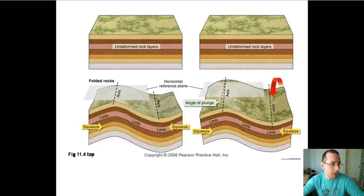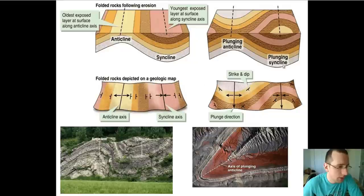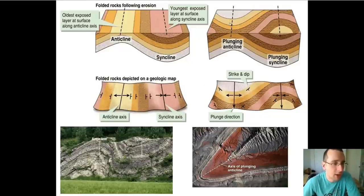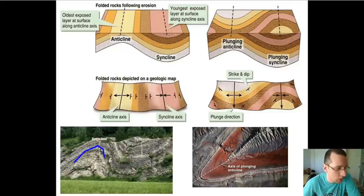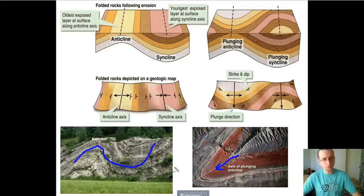If you look at how this appears on a topographical map, you will see the anticline and syncline in their normal form. But in the case of the plunging fold, it changes the pattern because one side will be higher than the other. You can see that happening in rock outcrops with anticlines and synclines — and where the fold is plunging downwards, you see that change in pattern as well.